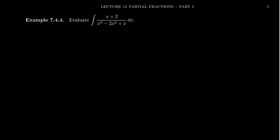We'll notice that the denominator is not factored. Whenever you try to factor anything, look for common divisors. x³, x², and x all have a common factor of x, so factor that out. You're left with x(x² - 2x + 1).